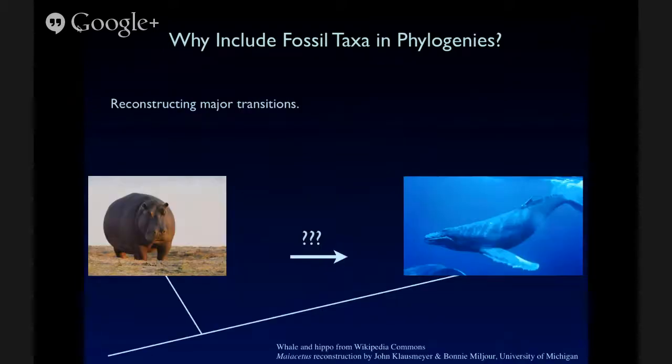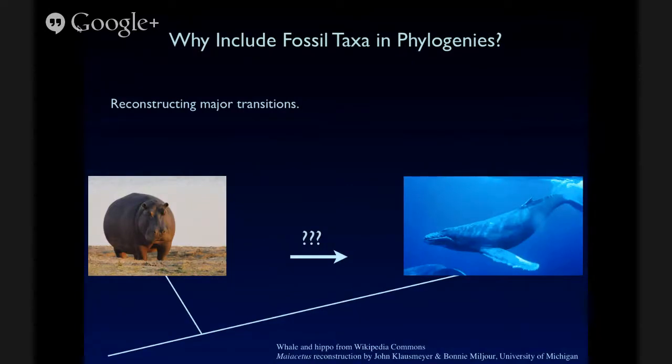And fossils are also very important because they can help us understand major transitions, and so we have really good molecular data, for example, that support a sister group relationship between hippos and whales amongst extant mammals, but we could spend all day staring at a hippo, which might be fun, but it wouldn't tell us anything really about the evolution of features such as flippers, or baleen, or sonar.